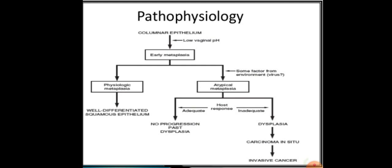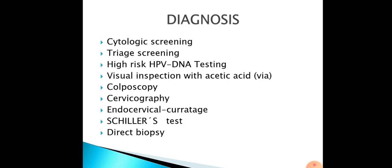CIN 1 and CIN 2 should not be ignored but followed up carefully. For diagnosis of pre-malignant lesion, various types of screening are used: cytologic screening, triage screening, high-risk HPV DNA testing, visual inspection with acetic acid, colposcopy, and cervicography.